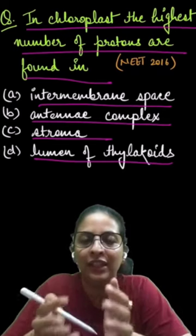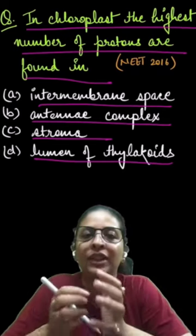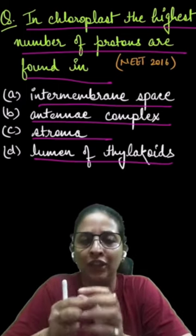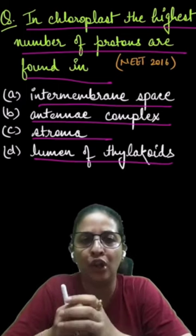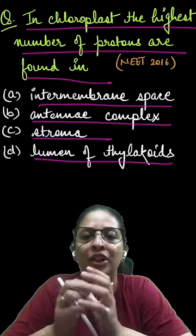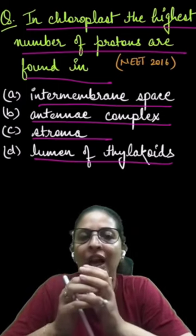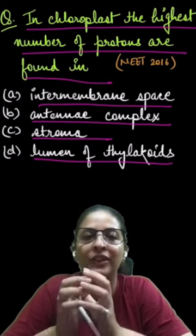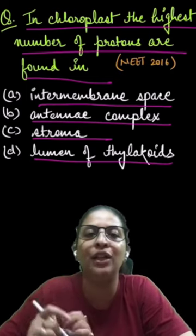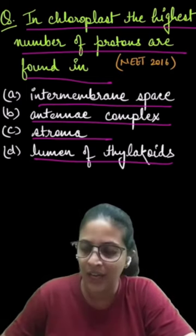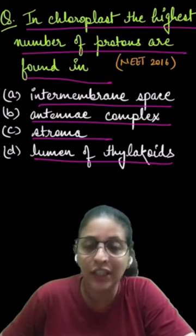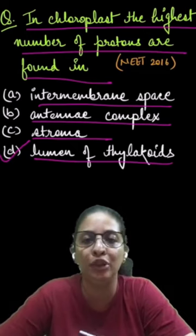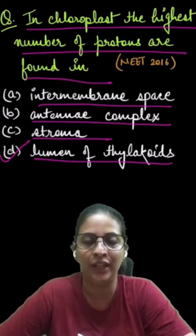They accumulate within the lumen of the thylakoid. So the highest number of protons or hydrogen ions are found in the lumen of the thylakoid in the chloroplast, and that is why the correct option is D — lumen of thylakoid.